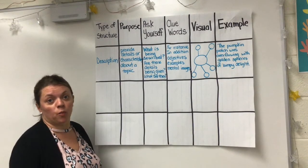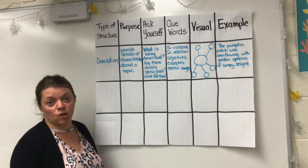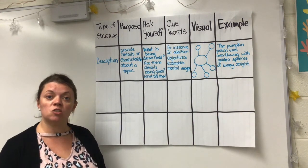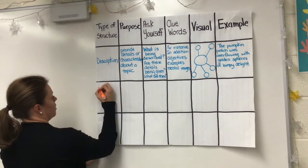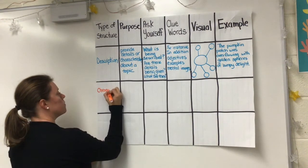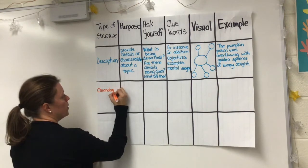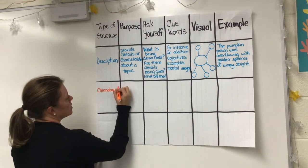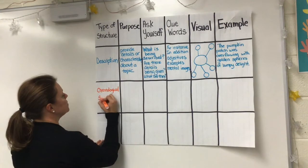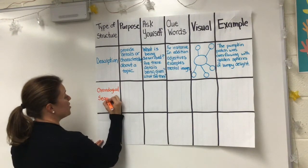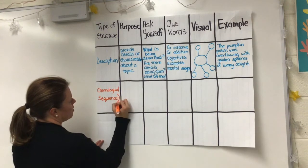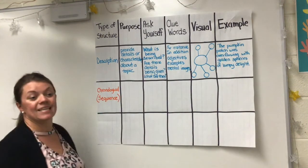The next text structure we're going to be taking a look at is chronological or sequence. A chronological text structure goes in order. We're going to add both words to our graphic organizer chart, because it's important — in case we don't know what chronological means yet, you'll have them both on here. We'll put chronological and then in parentheses sequence.